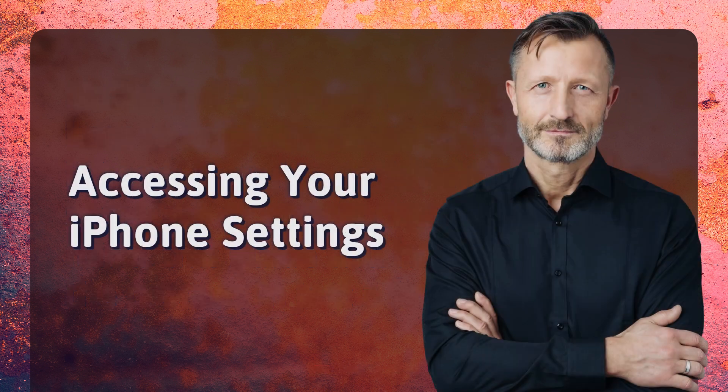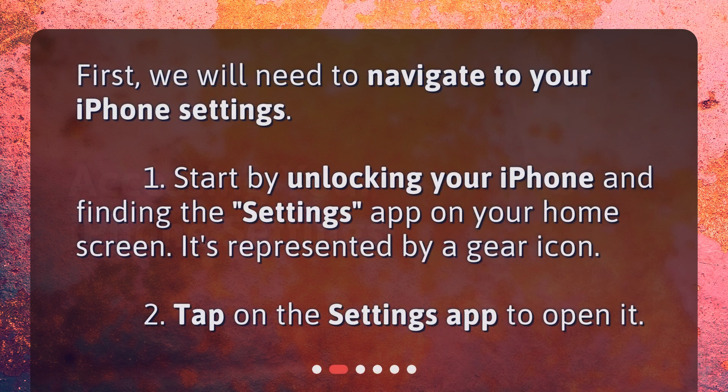Accessing your iPhone settings. First, we will need to navigate to your iPhone settings. Start by unlocking your iPhone and finding the Settings app on your home screen — it's represented by a gear icon. Tap on the Settings app to open it.